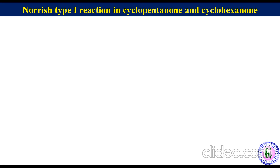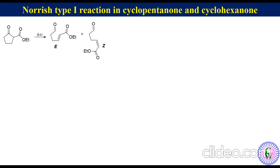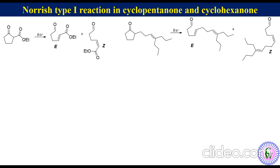For cyclopentanone derivatives: for 2-ethoxycarbonylcyclopentanone, since cyclopentanone derivatives give gamma-delta unsaturated aldehydes, upon irradiation it will give E and Z isomers of ethyl 2-oxohex-2-enoate. Similarly, this cyclopentanone derivative will give E and Z isomers of the corresponding unsaturated aldehyde.